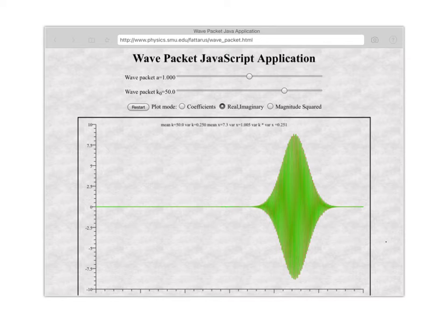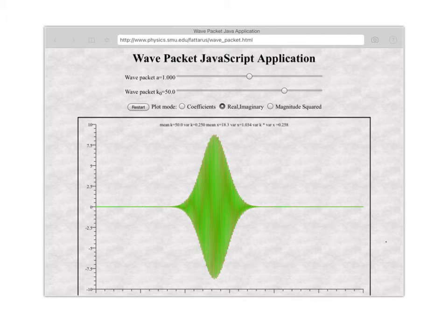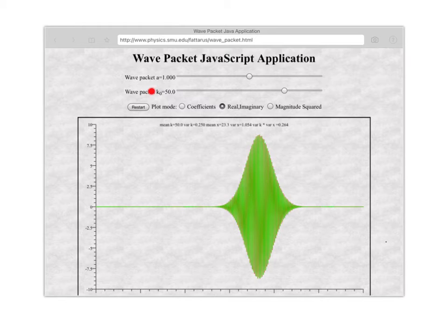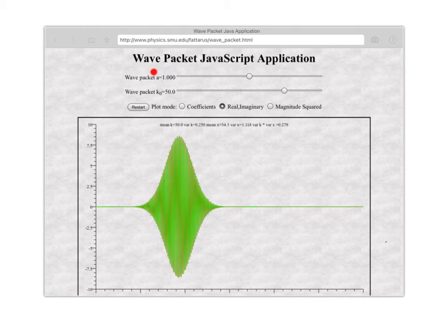So to visualize what that looks like, we can use this little applet that you can find on the web at the address that you see up here, and what we've done here is we have created a wave packet with our initial wave vector equal to 50, and we've added in, so this a factor is the number of different, the spread in wave vectors that we've used.